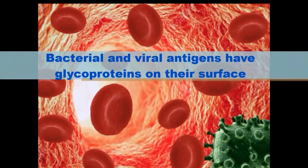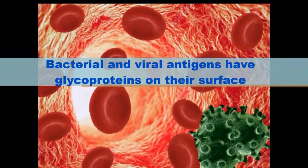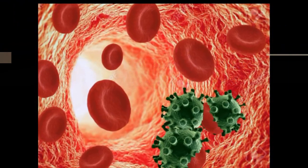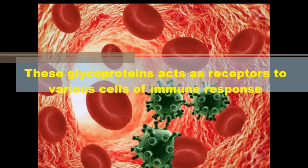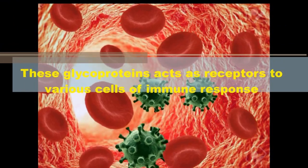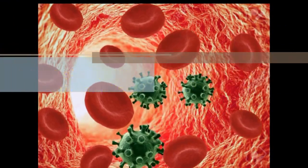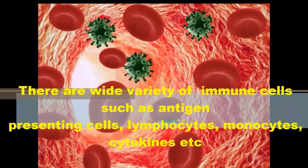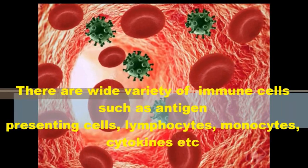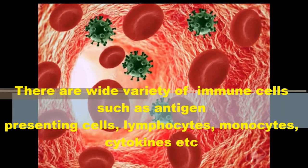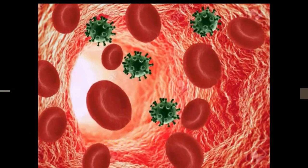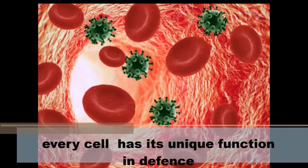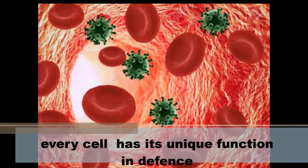Bacterial and viral antigens have glycoproteins on their surface. These glycoproteins act as receptors to various cells of the immune system. There are a wide variety of immune cells such as antigen-presenting cells, lymphocytes, monocytes, cytokines, etc. Every cell has its unique function in defense.